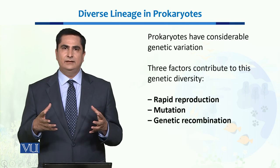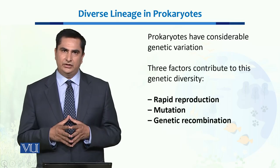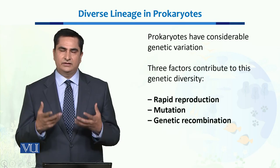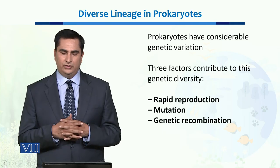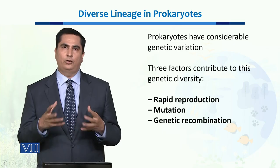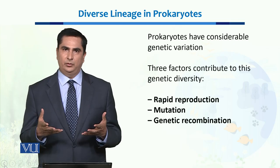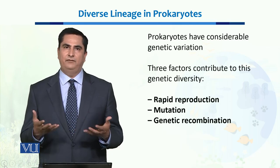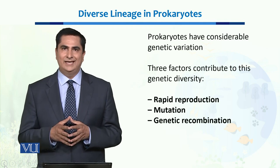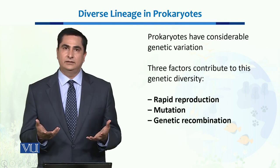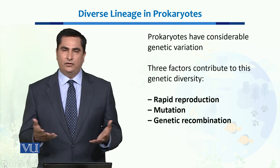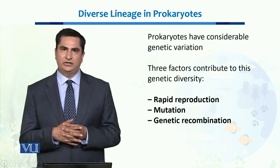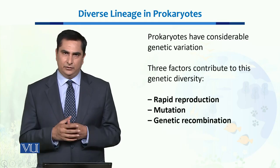These 5 groups have considerable genetic variation among them, and there are certain factors which contribute to this genetic diversity. Four of them are very prominent. The first is rapid reproduction — bacteria have the ability to divide very fast. Some bacteria can multiply in 20 minutes, and most bacteria multiply within 1 to 3 hours. This rapid reproduction has led to their genetic diversity.